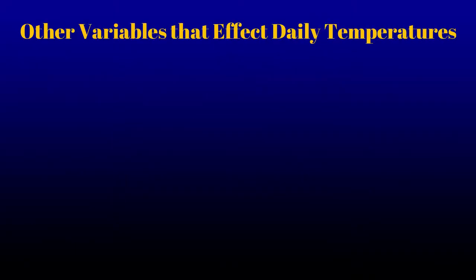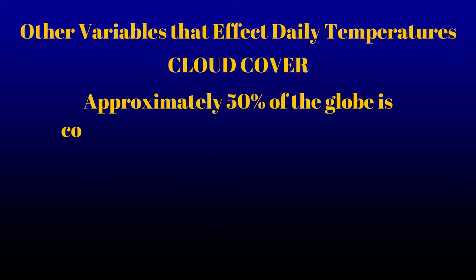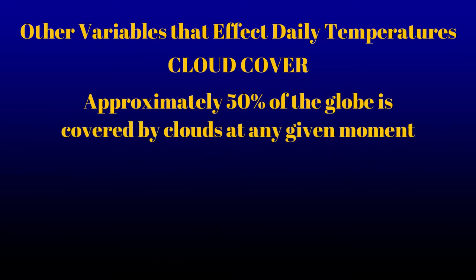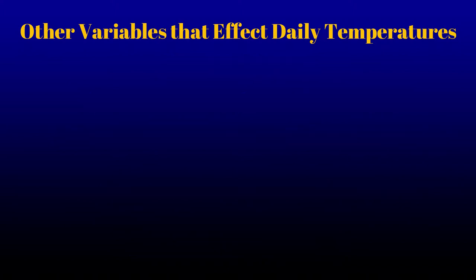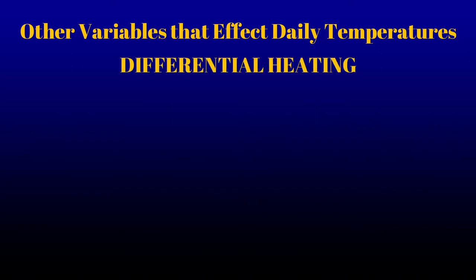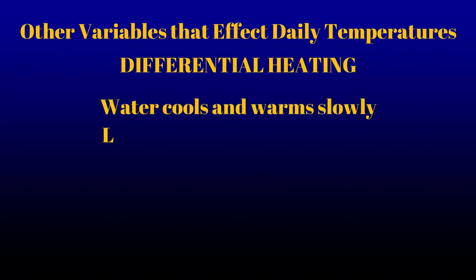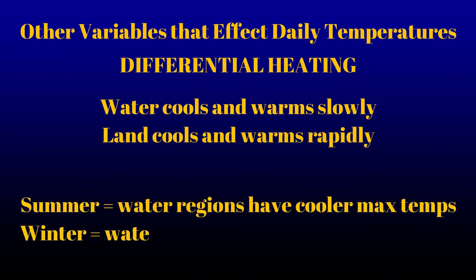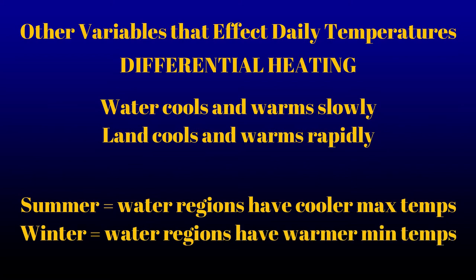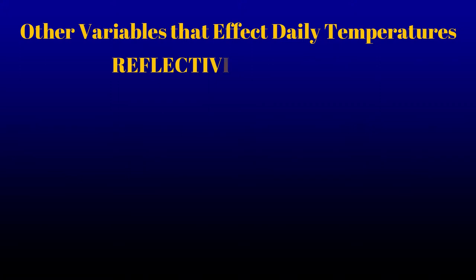Other variables which affect daily temperatures are cloud cover. Approximately 50% of the globe is covered by clouds at any given moment. During cloud cover, there are lower maximum temperatures and higher minimum temperatures. Differential heating of land and water is another factor, in which water cools and heats slowly, and land cools and heats rapidly. In the summer, water regions have cooler maximum temperatures, and in the winter, water regions have warmer minimum temperatures.